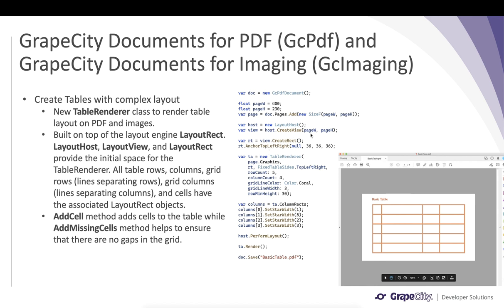LayoutView has width and height similar to the PDF page, so it will give you the dimensions where you want to render an object. All the table rows, columns, grid rows, grid columns, and cells drawn in a table will have associated objects in the LayoutRect engine.